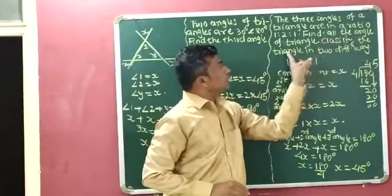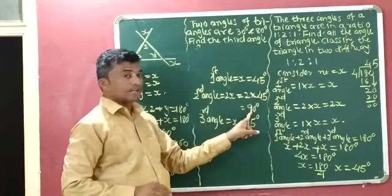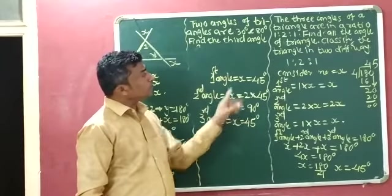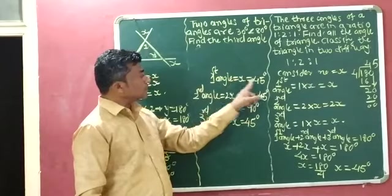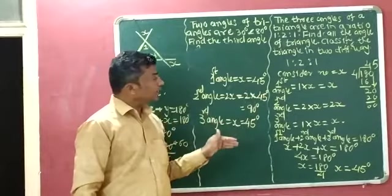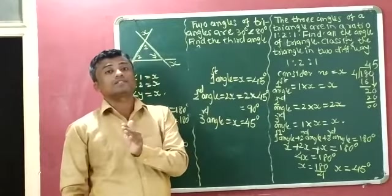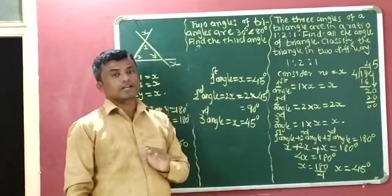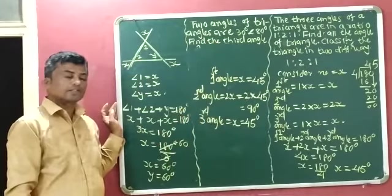Now we classify the triangle in two different ways. The first angle is 45 degrees, the second angle is 90 degrees, and the third angle is 45 degrees. Since one angle is 90 degrees, it is a right-angled triangle. Since two angles are equal — both 45 degrees — two sides are also equal, so the triangle is also an isosceles triangle. Thank you.